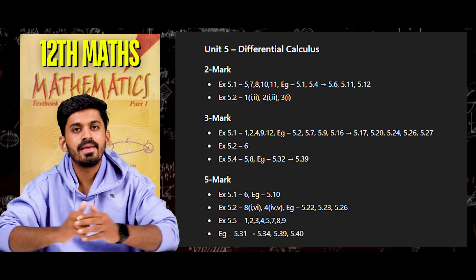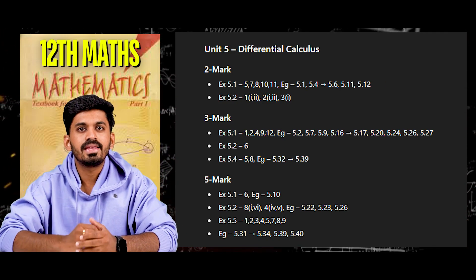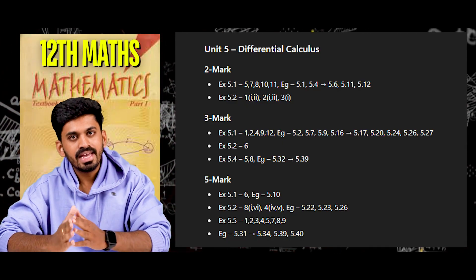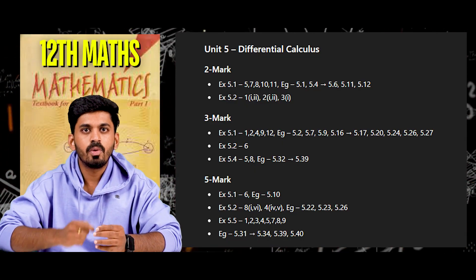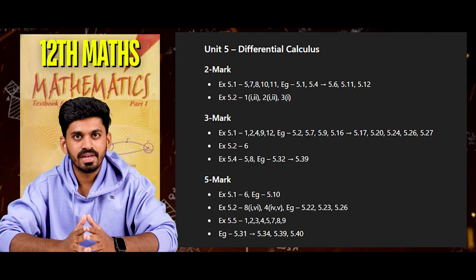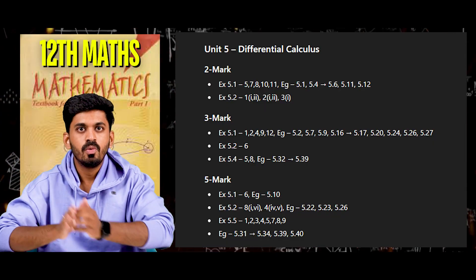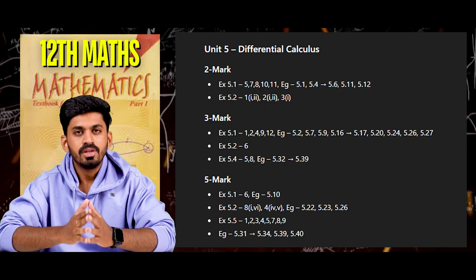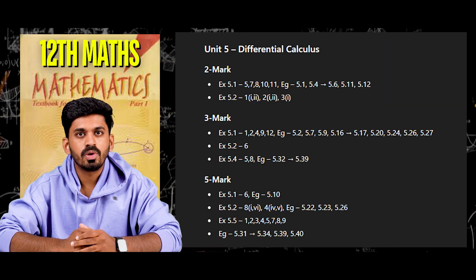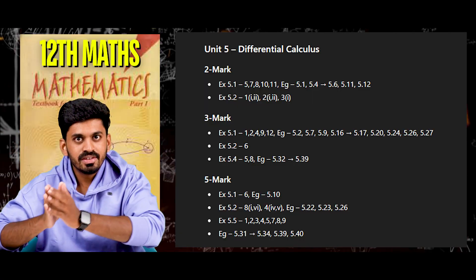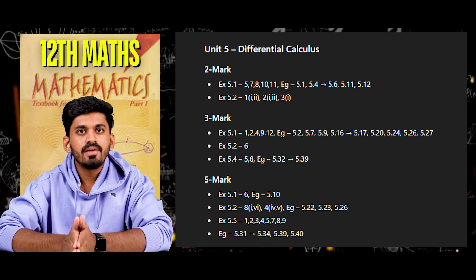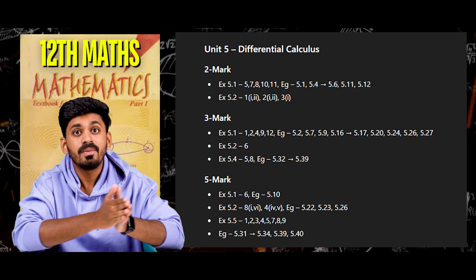Unit 5, 2-mark questions: Exercise 5.1 law 5, 7, 8, 10, 11. Examples 5.1, 5.4, 5.5, 5.6, 5.11, 5.12. Exercise 5.2 law 1, Roman numeral 1 and 2; law 2, Roman numeral 1 and 2; law 3, Roman numeral 1. 3-mark questions: Exercise 5.1 law 1, 2, 4, 9, 12. Examples 5.2, 5.7, 5.9, 5.16, 5.17, 5.20, 5.24, 5.26, 5.27. Exercise 5.2 law 6. Exercise 5.4 law 5 through 8. Examples 5.32 and 5.39.